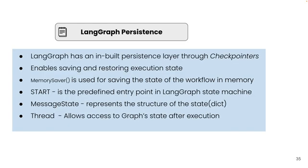Now we'll see what LangGraph persistence is. LangGraph has a built-in persistence layer through checkpointers. We'll use an in-memory checkpointer. This enables saving and restoring the execution state. MemorySaver is used for saving the state of the workflow in memory. START is a predefined entry point in the LangGraph state machine. MessageState is a dictionary which represents the structure of the message state. Thread ID is a unique ID which allows access to the graph state.